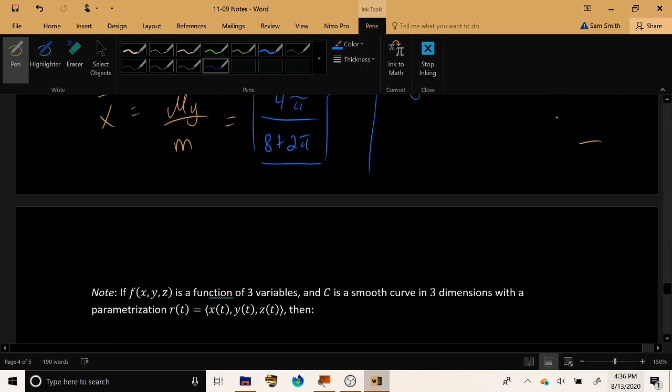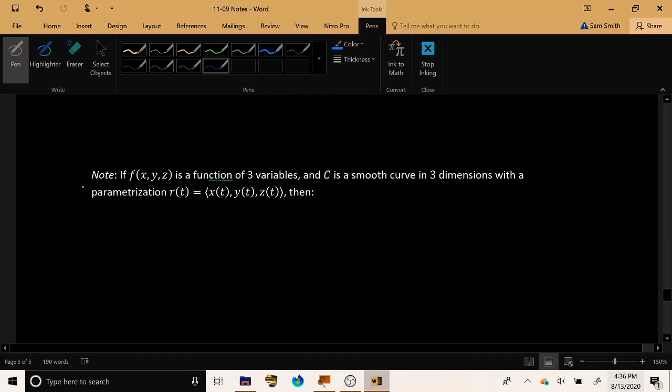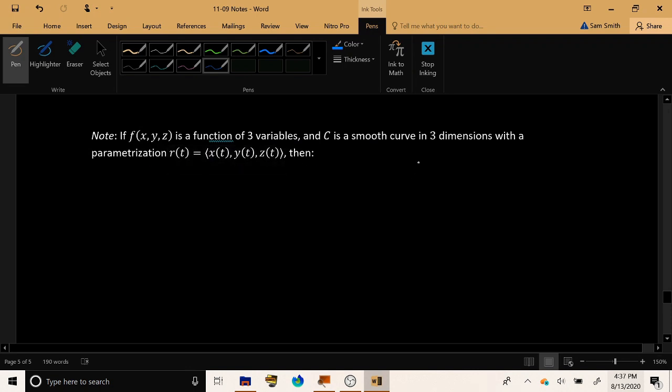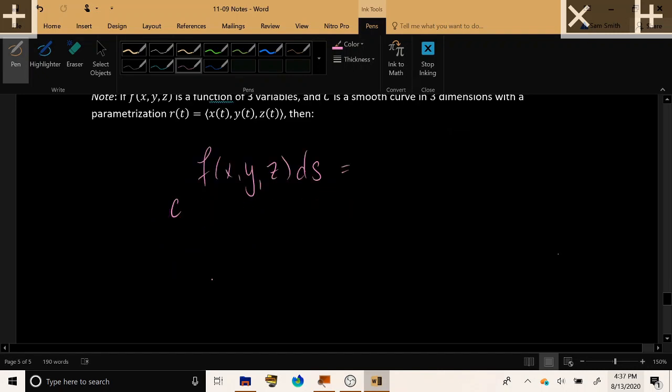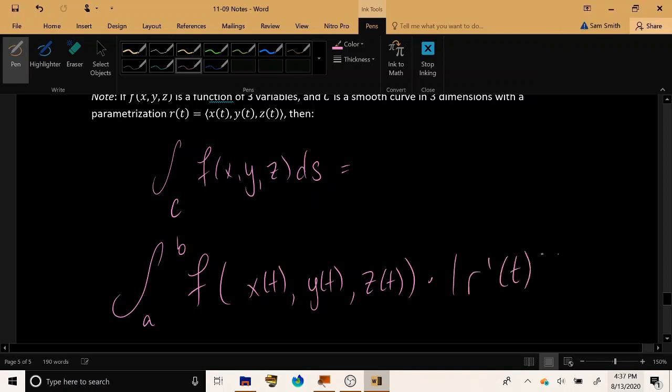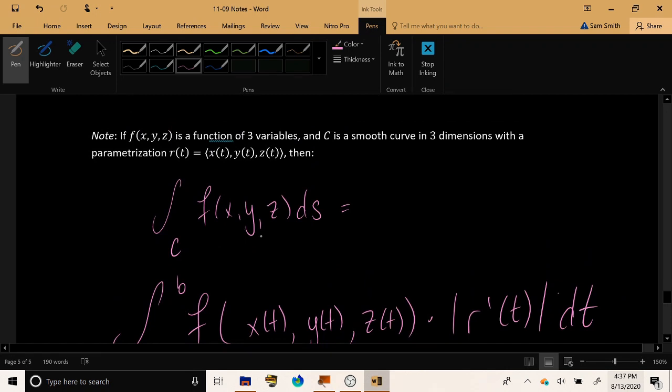Alright. Now just as a quick final note if you have a function of 3 variables and c is a smooth curve in 3 dimensions that has a parametrization that's 3 dimensional then you can still calculate the line integral over c of f(x, y, z), you can just do almost the same formula. You take the parametrization and you take the limits of that parametrization and then you take the components of that parametrization and plug them into the function and then you multiply by the parametrization's speed and integrate that from start to finish. That is the 3 dimensional equivalent for a mass of something like a wire or a string that's being thought about in 3 dimensional space.